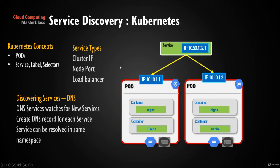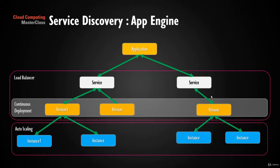From the consumer side, you don't have to implement service discovery yourself — it is already there and managed. Services can also have metadata attached, allowing you to differentiate different services. In Kubernetes, the DNS service watches for new services and creates new DNS records for each one. Services can be resolved within the same namespace, so all pods sharing that namespace can discover individual services through DNS.